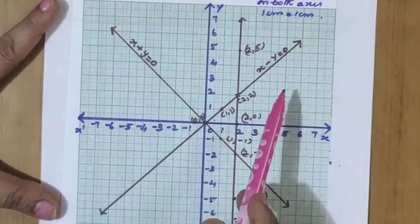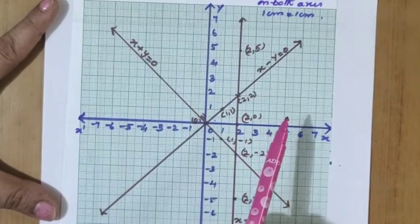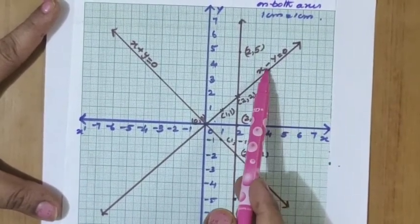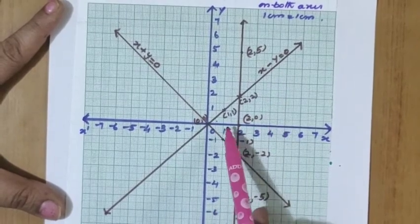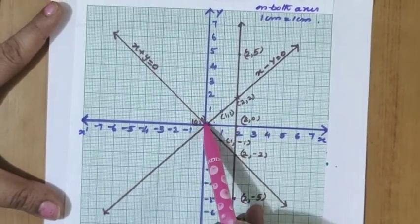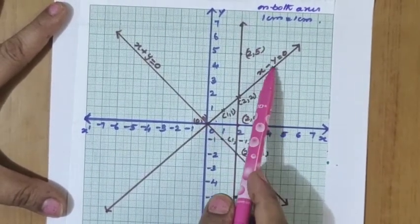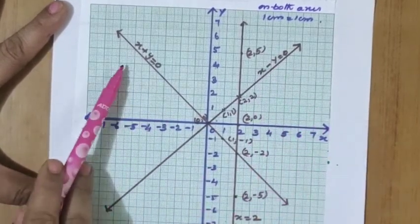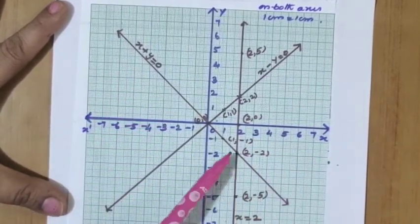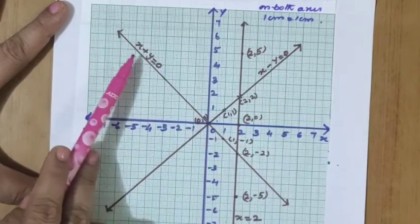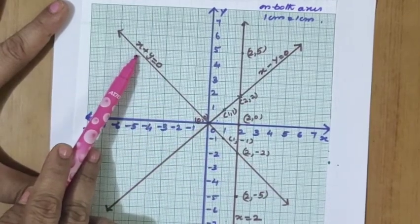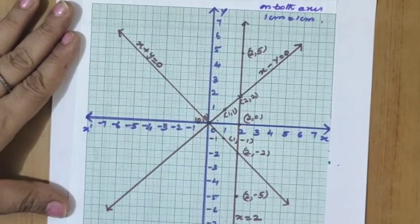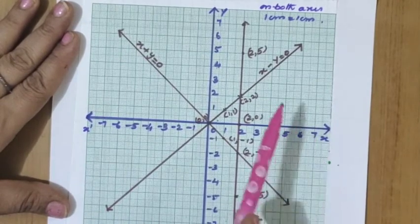Now let us see the graph. First we draw the x and y axis, then plot each line one by one using the coordinates. The first line x minus y equal to 0 passes through (0,0), (1,1), (2,2) — always label the line. Similarly, the second line x plus y equal to 0, and the third line x equal to 2 is parallel to the y axis.